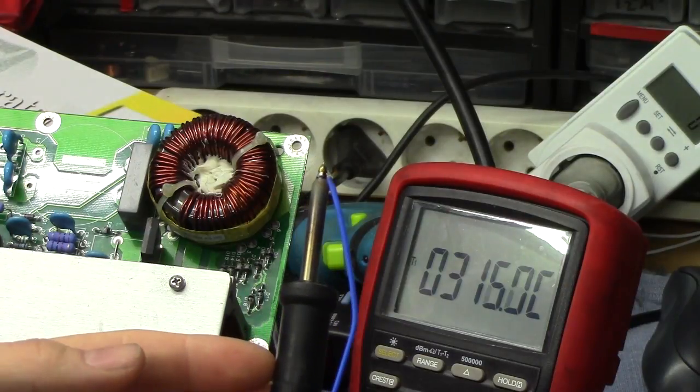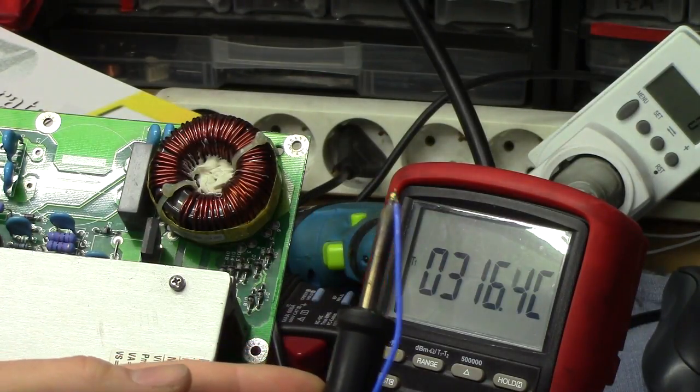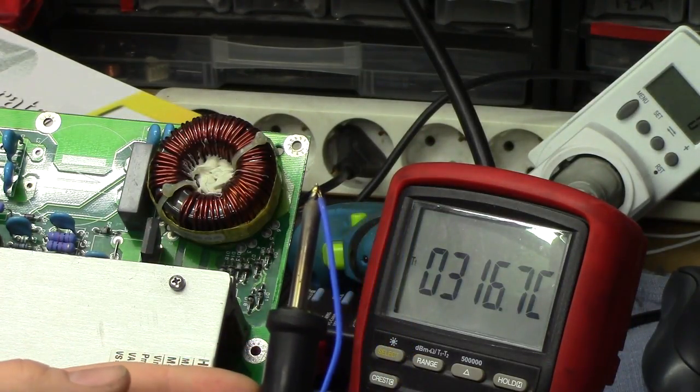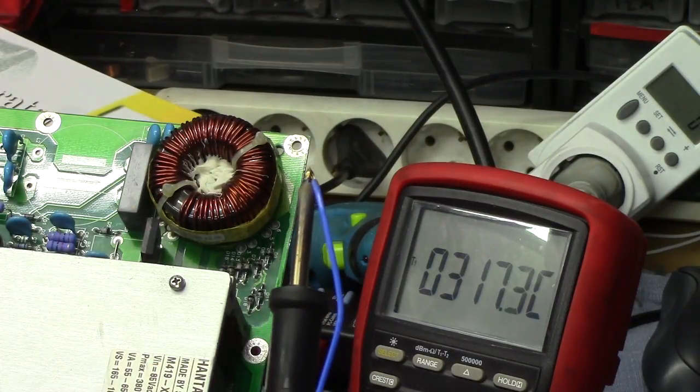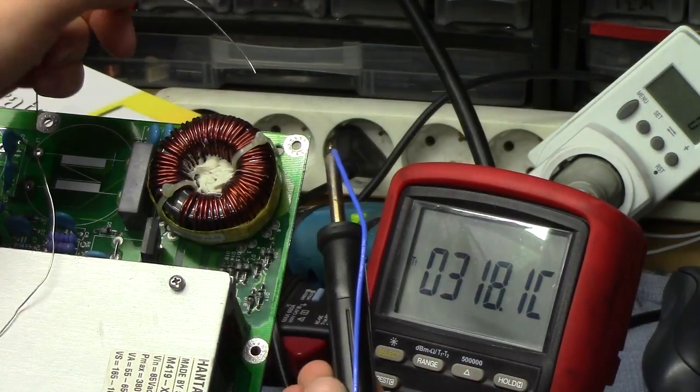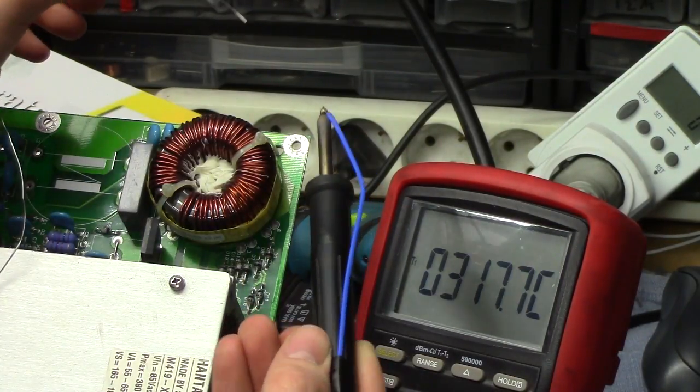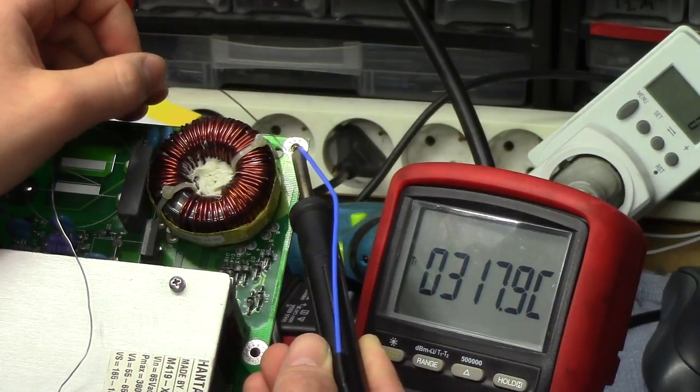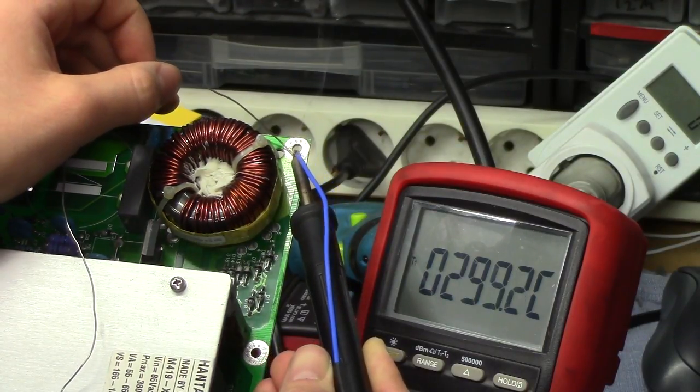And just for the hell of it, let's do the same thing with this little tiny ballpoint tip. This is the smallest tip you can get for these, basically. Now I've flipped the board, we're in the opposite corner, so this is a room temperature part of the board.